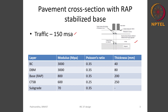Let us assume a 5-layered structure with 2 HMA layers — BC and DBM — of 40 and 80 millimeter thickness. We will use a modulus of BC and DBM layer to be 3000 mega Pascal. The base course used here is a RAP stabilized base. We will assume a thickness of 200 millimeter with a modulus of 800 mega Pascal. This base is resting on a cement treated sub base with a modulus of 600 mega Pascal and a thickness of 250 millimeter.